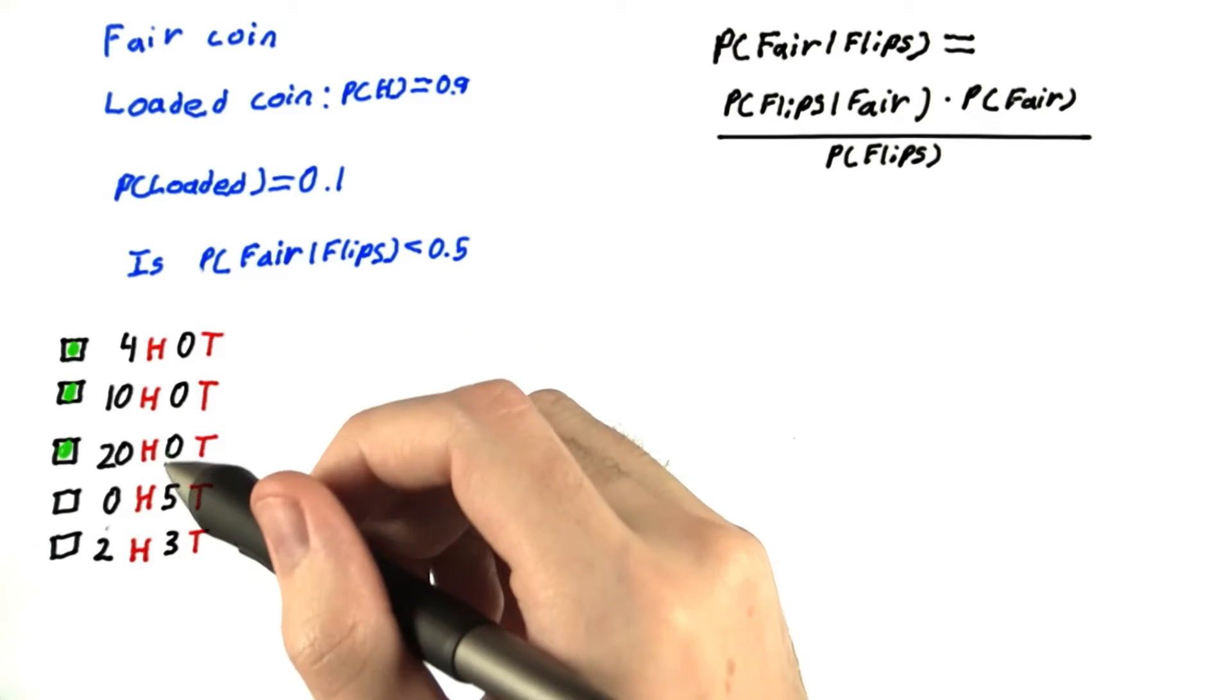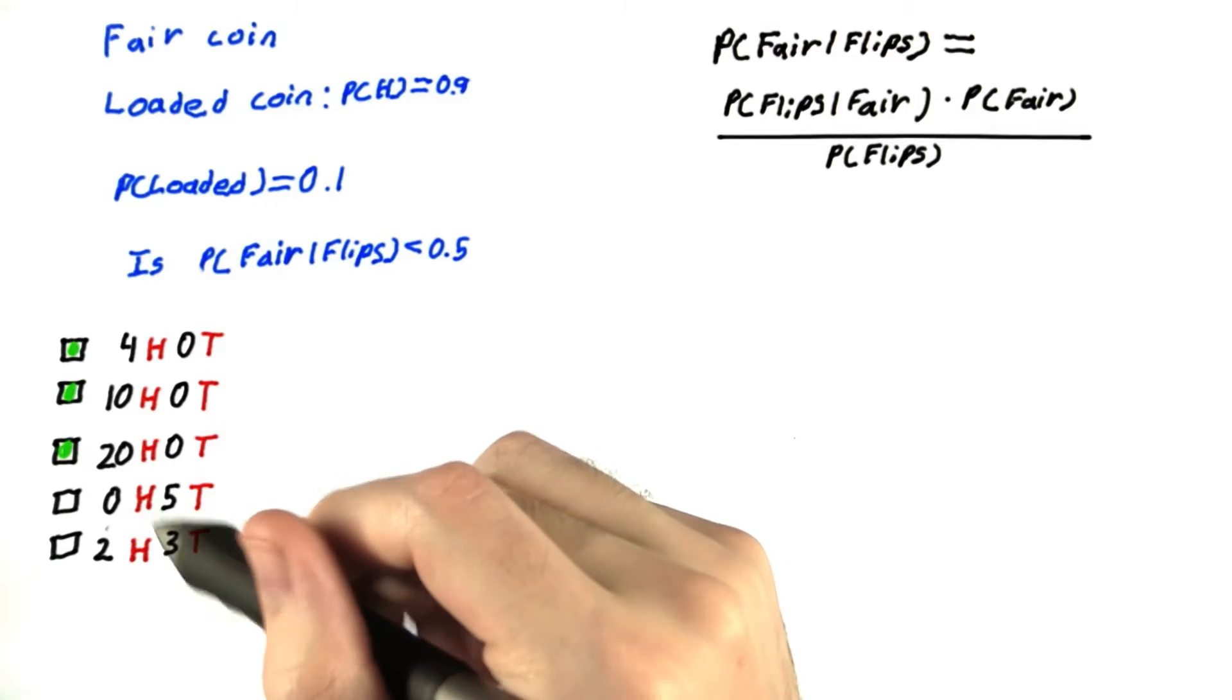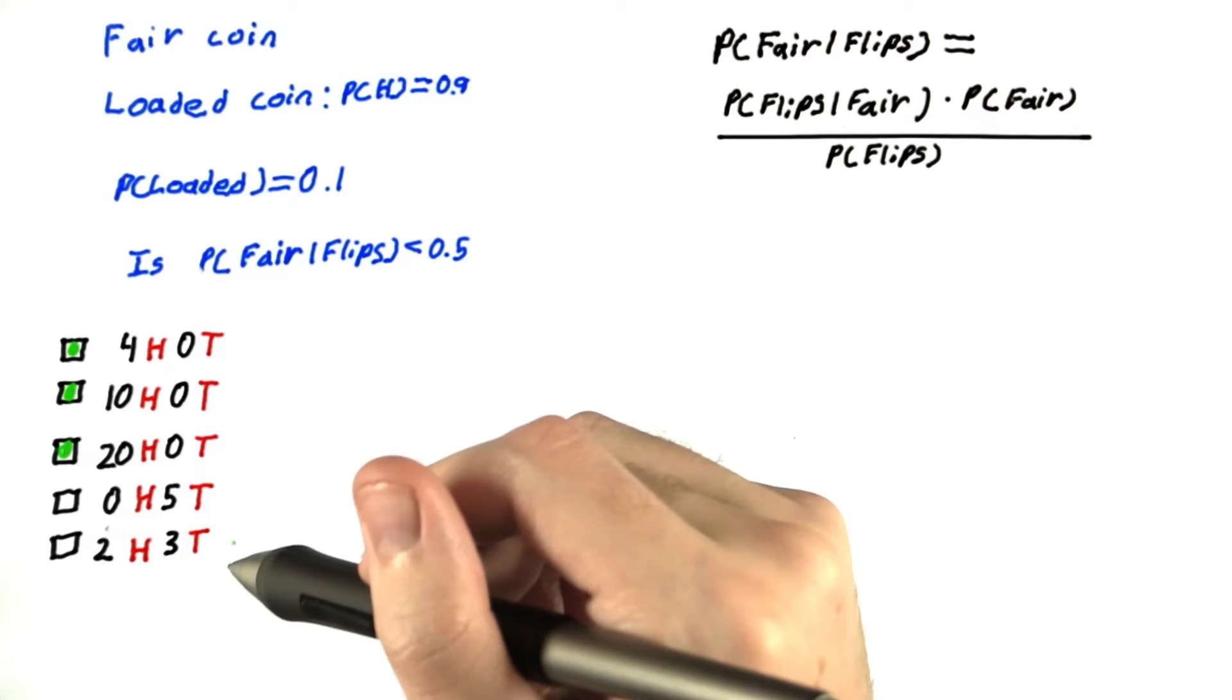We have three answers. We can quickly rule out these because they should be less likely from a loaded coin that's disproportionately heads, since they each have more tails than heads.